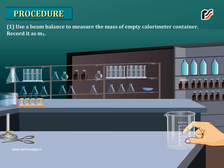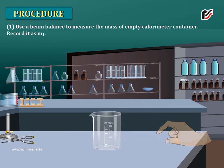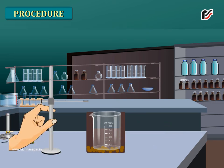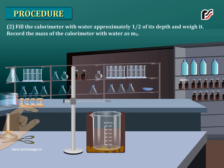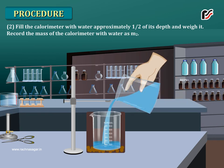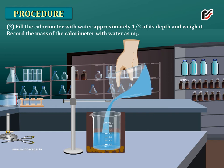Procedure: Use a beam balance to measure the mass of empty calorimeter container. Record it as M1. Fill the calorimeter with water approximately half of its depth and weigh it. Record the mass of the calorimeter with water as M2.